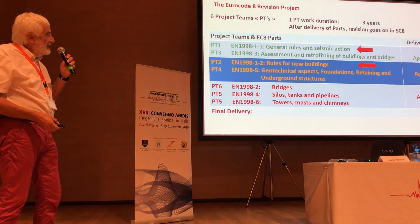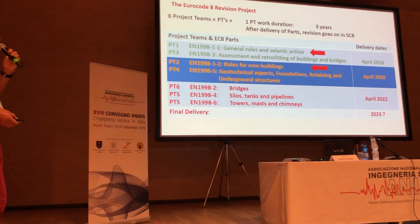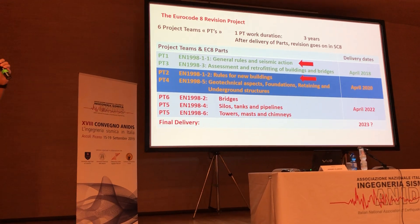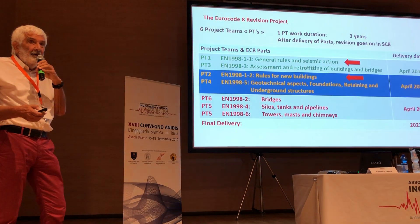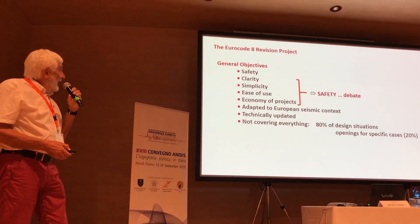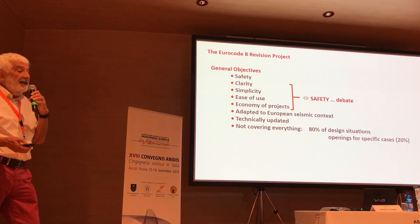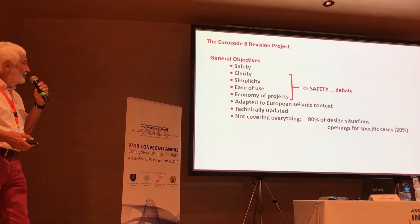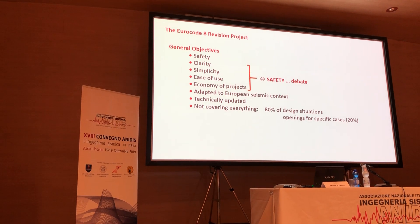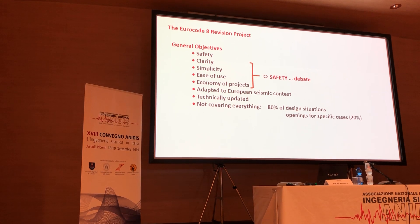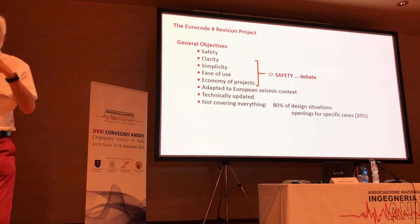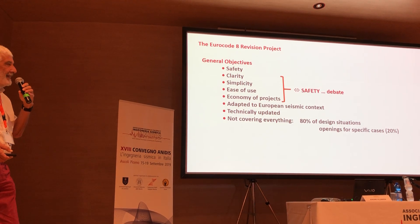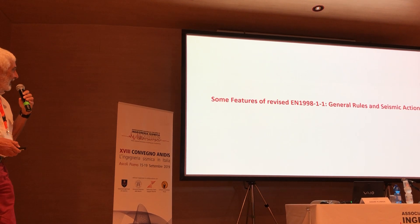I'll talk briefly about the general rules and seismic action, which we need to discuss buildings, and then I will talk about rules for new buildings. The delivery date for the second aspect is April 2020, so it's not yet a completely finished document. The general objectives as defined by CEN are: provide safety, be clear, simple, easy to use, give economical projects, reflect the European seismic context, technically update it, and not necessarily cover every possible type of problem.